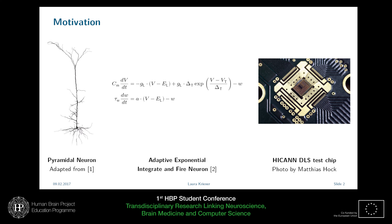That is basically where I work. We are trying to verify that although we have these constraints due to the small size and the acceleration, the key features of the implemented models are still captured. You need to do this verification during the production process or the design of the chip, because if the chip is fabricated and you notice later that you are missing something of the model, it is too late — you have to wait for a new chip.